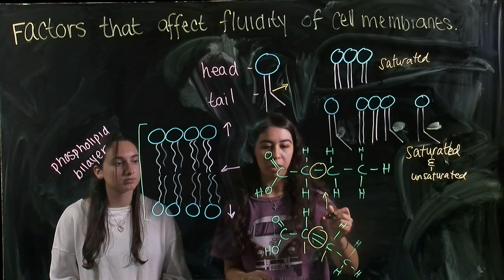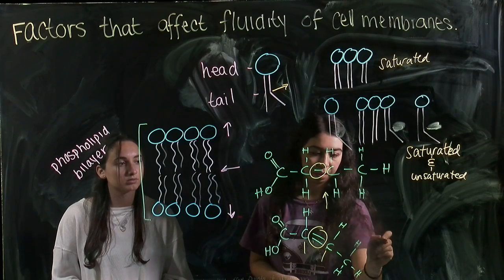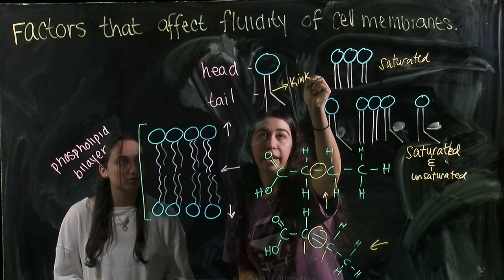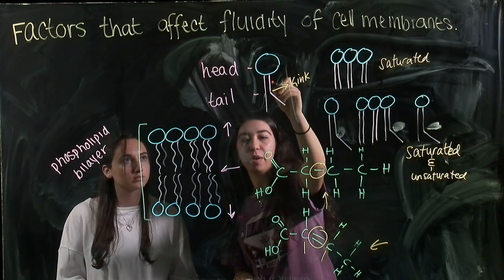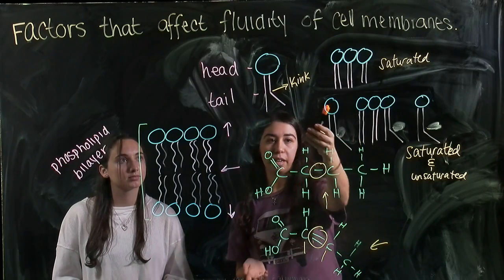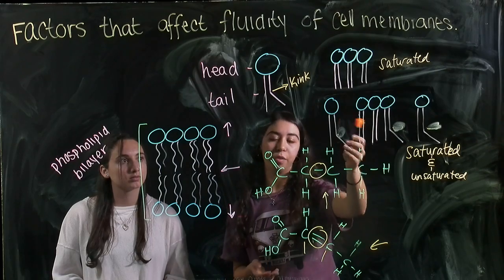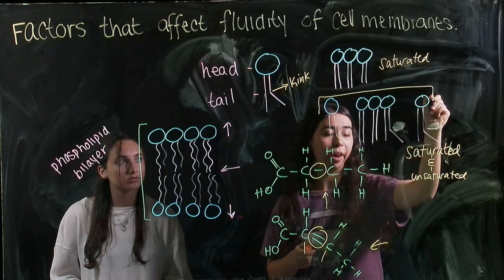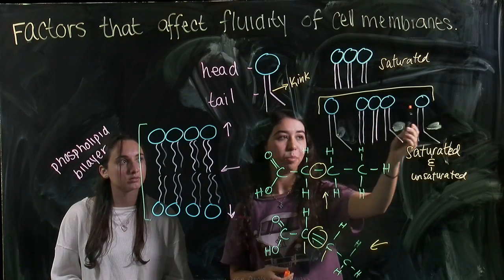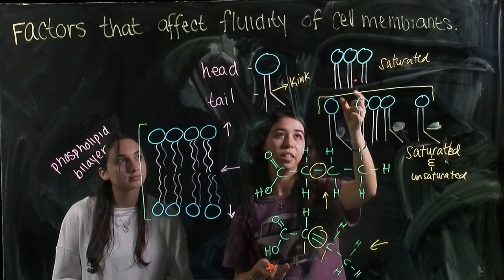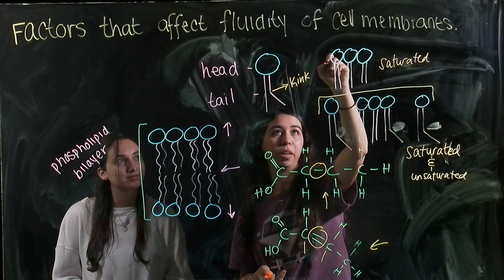We not only see this in this molecule down here, but we also see it over here in the actual tail of the phospholipid, how this one bends. Basically, these kinks or bends cause the phospholipids in a bilayer to be farther apart from each other in comparison to when they're completely saturated and they're very closely packed, which we can see up here.